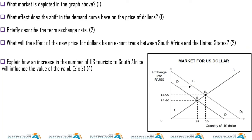This is the same diagram, but now again it's a shift of the demand curve, so it represents the appreciation of the dollar and the depreciation of the rand. What market is depicted? That is the foreign exchange market.